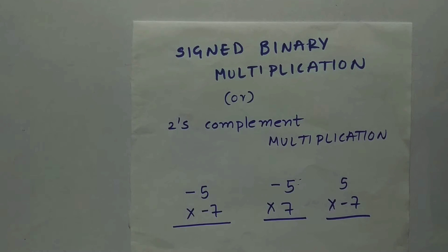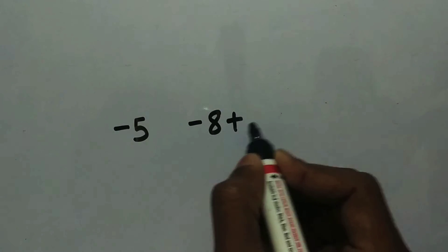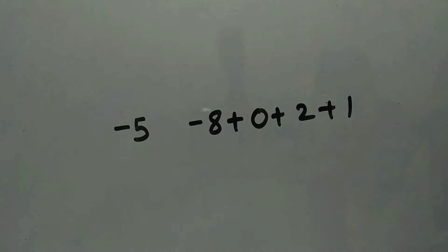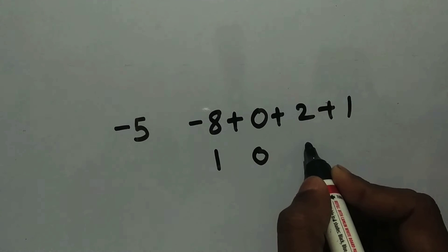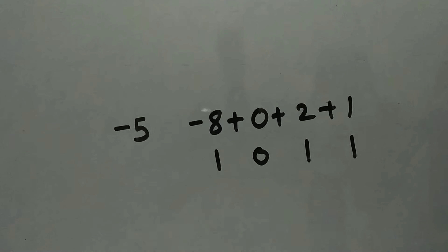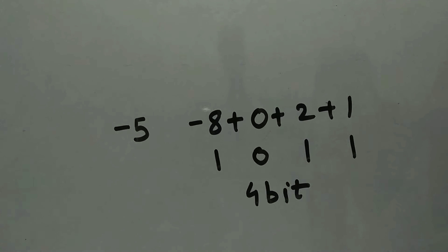Before we go into the multiplication, I want you to know the basics — that is sign bit extension. Let's see what is meant by sign bit extension. Here we have minus 5. How can we write minus 5 in binary? It is 8 plus 0 plus 2 plus 1 — that is 2³, 2² is 0, 2¹ is 1, and 2⁰ is 1. So minus 5 is represented in two's complement form as 1011 — a 4-bit number.